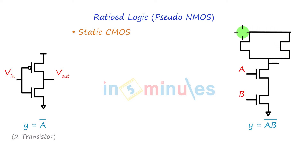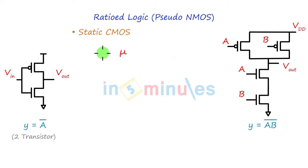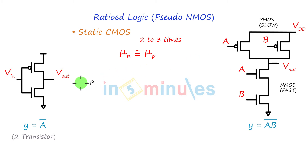Now, if you remember — you can refer to the clip on symmetric inverters — the mobility of electrons is more than the mobility of holes, and that ratio is somewhere around two to three times mu_P. So what's happening is my NMOS transistors are fast and my PMOS are slow. In order to make PMOS faster and have the same speed as NMOS, we need to size our PMOS — we need to increase the W by L of PMOS.